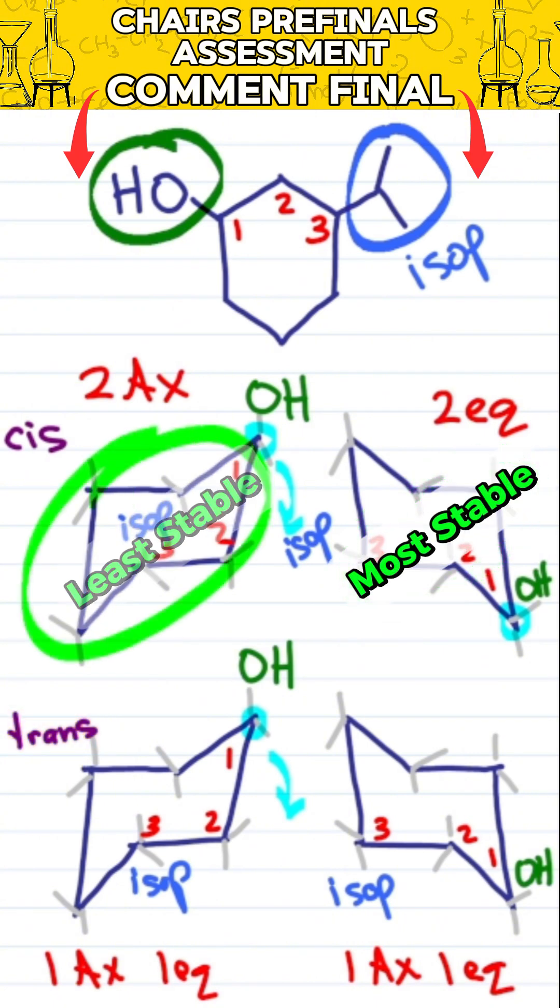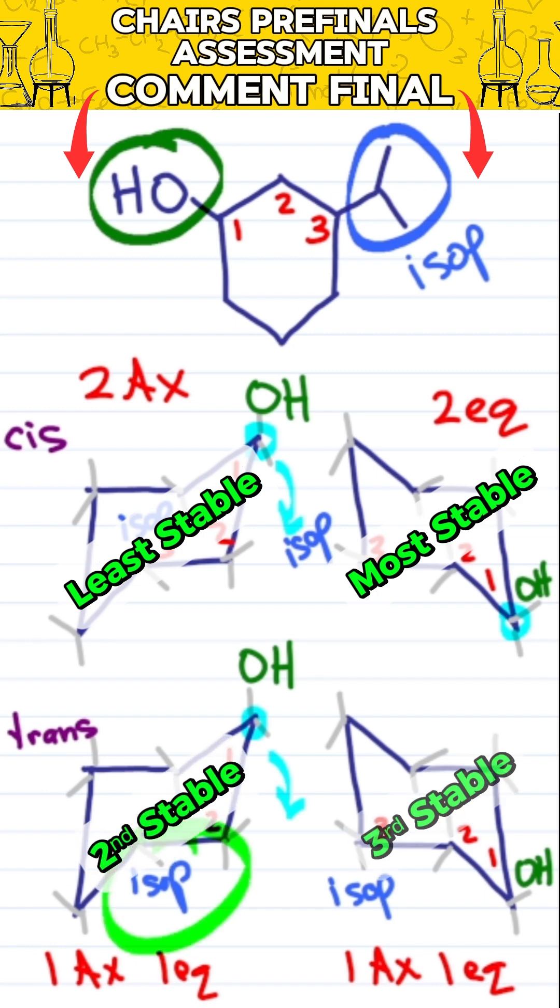Two axial least stable. For trans, the bigger group equatorial is more stable, making this number two and this one three.